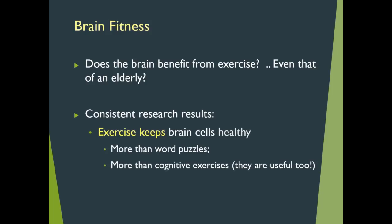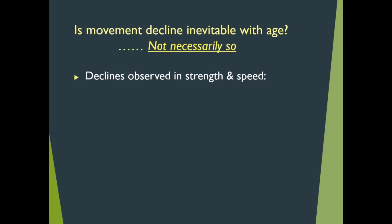Exercise — more than word puzzles, more than Sudoku, more than cognitive exercises like New York Times crossword puzzles — is the one consistent result for brain health. Those are useful too, but exercise essentially guarantees that our field as exercise scientists will continue to have a niche regardless of the age or lifespan stage we are discussing. Is movement decline inevitable with age? Not necessarily. Declines observed in strength and speed are likely to be seen; however, the caveat is it is not one-to-one in terms of correspondence.